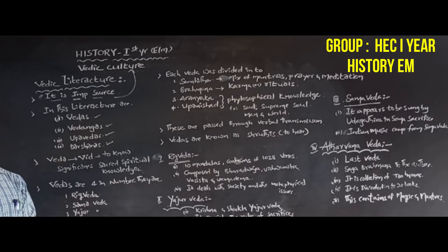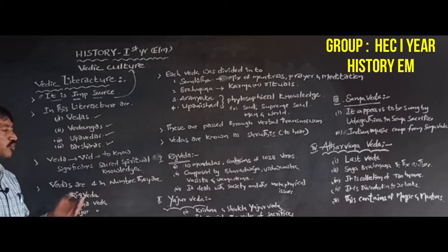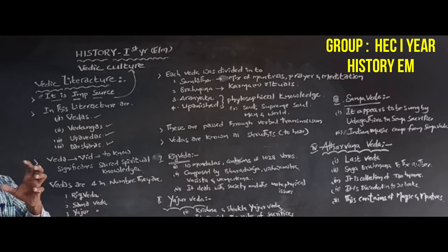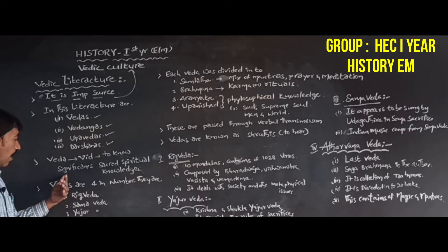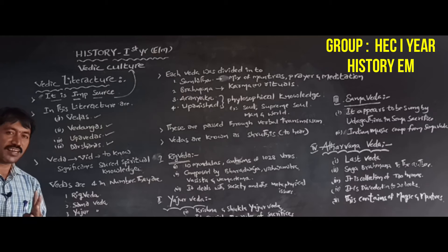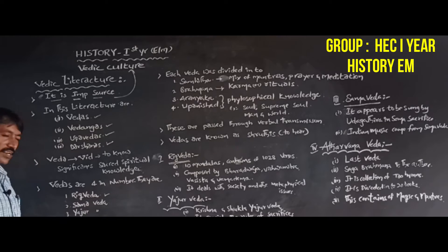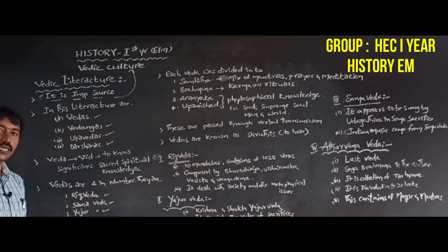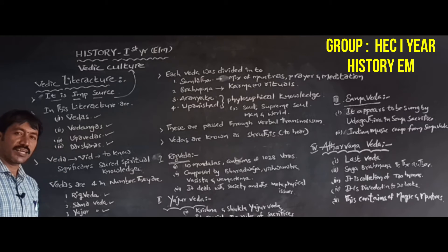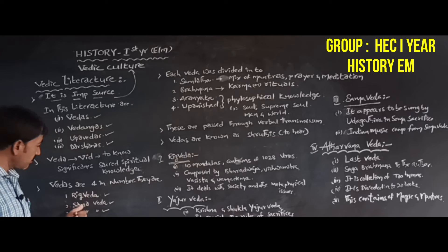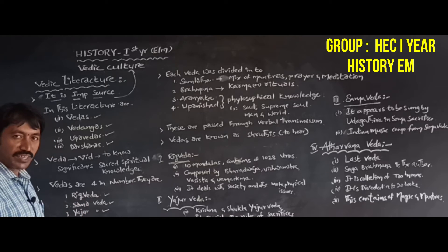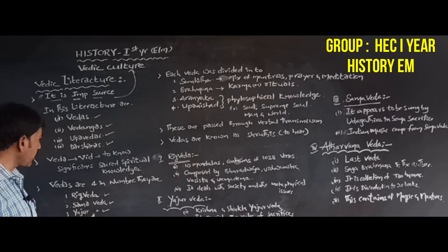What is the main theme of Vedas? The main theme of Vedas is sacred spiritual knowledge, and it is most important for the study of philosophy. There are four Vedas: the first is Rig Veda, the second is Sama Veda, the third is Yajur Veda, and the fourth is Atharvana Veda.